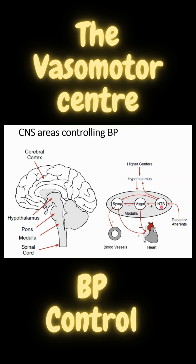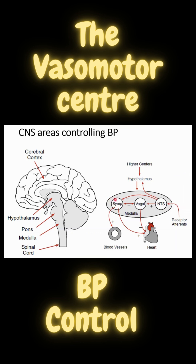The first port of call within the vasomotor center is the Nucleus Tractus Solitarius (NTS). This integrates all the afferent information about blood pressure, and like a good postal service, disseminates this information in three directions: one is to send it off to higher centers via the hypothalamus, another to the sympathetic vasoconstrictor center, and the third to the vagal vasodilator or decelerator center.